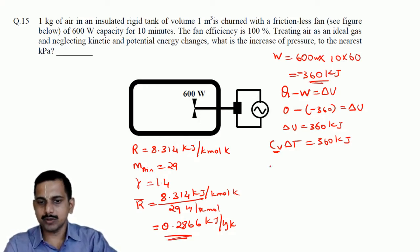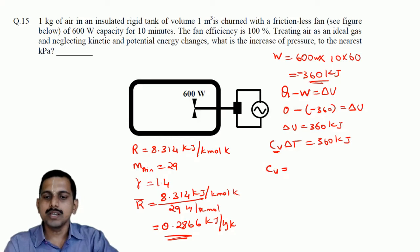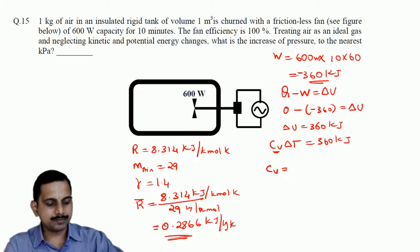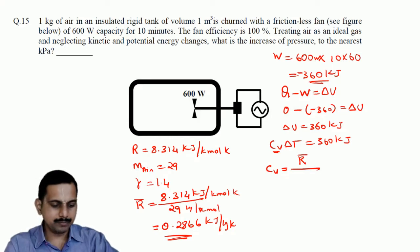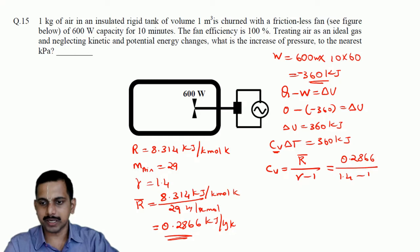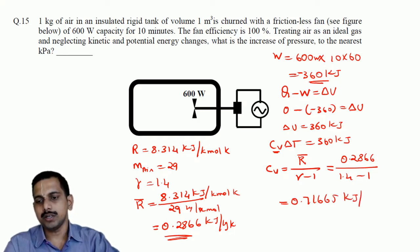From this we can find Cv. Cv is given as R divided by (gamma - 1), which equals 0.2866 divided by (1.4 - 1), and the answer is 0.71665 kJ/(kg·K).